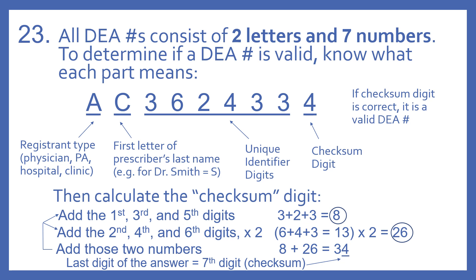The second letter indicates the first letter of the prescriber's last name. For example, if this was Dr. Smith's DEA number, the second letter would be an S for Smith. The next six digits are the unique identifier digits, and then the seventh digit — the very last digit of the DEA number — is called the checksum digit. If the checksum digit is correct, it's a valid DEA number.